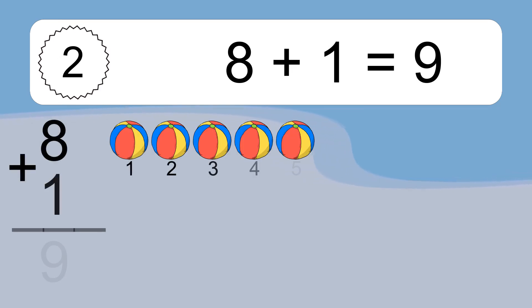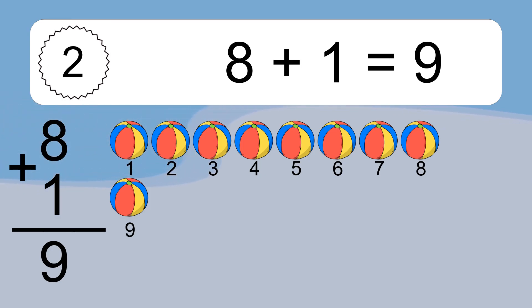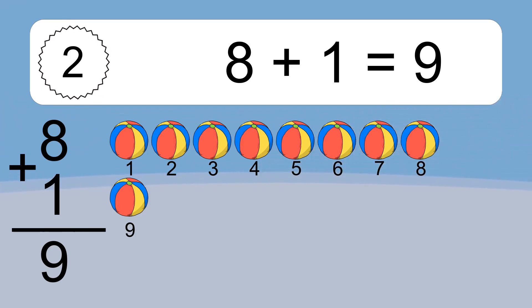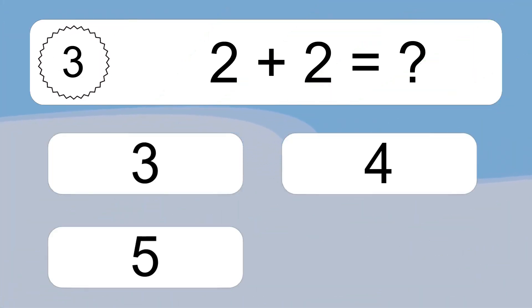8 plus 1 equals what? 8 plus 1 equals 9. Let's count it: 1, 2, 3, 4, 5, 6, 7, 8, 9.